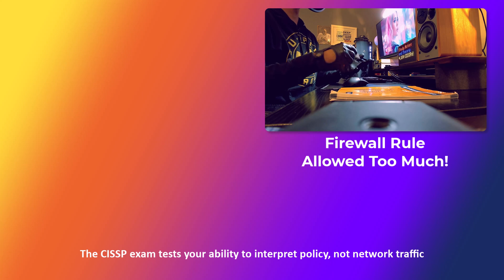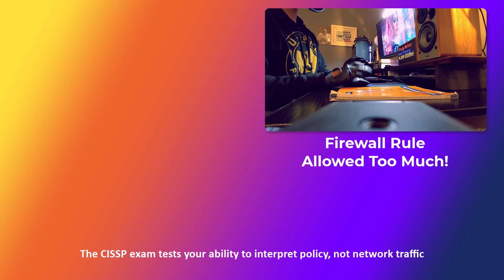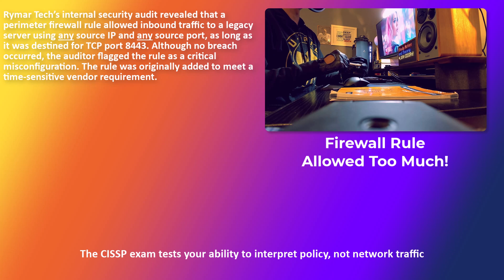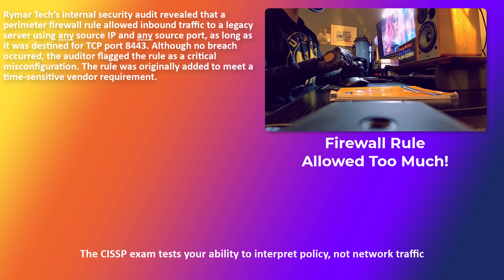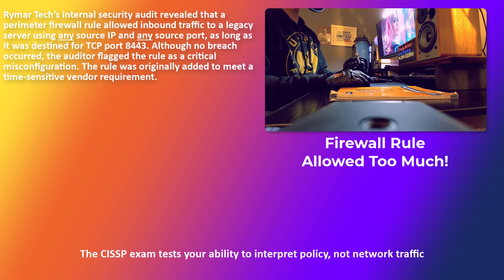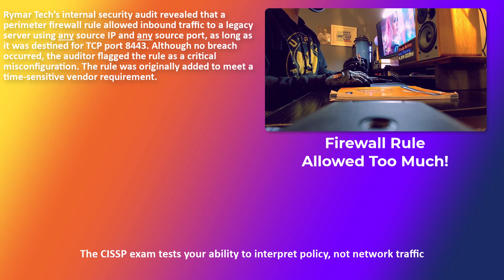The kind that organizations depend on when everything's on the line. Here's the practice question: Rymartech's internal security audit revealed that a perimeter firewall rule allowed inbound traffic to a legacy server using any source IP and any source port, as long as it was destined for TCP port 8443 — bonus points if you know what that port is. Although no breach occurred, the auditor flagged the rule as a critical misconfiguration.